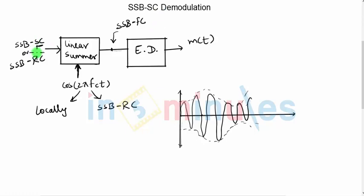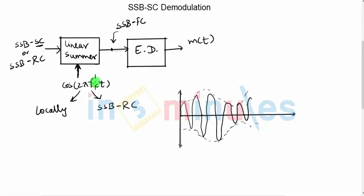So if you add carrier to the DSBSC or SSBSC signals, then you can simply pass it through the envelope detector and demodulate the received signal. This is the second approach that we use. Let us now discuss the proper receiver in which we add carrier to the SSB signal and use an envelope detector. Whenever we go to the receiver, please remember that we will never operate at carrier frequency. We will first down-convert the incoming carrier frequency to the intermediate frequency, and for this down-conversion we will use a mixer. Hence, the actual demodulator in the form of summer and envelope detector will operate at intermediate frequency and not the carrier frequency. Let's look at the receiver block diagram now.